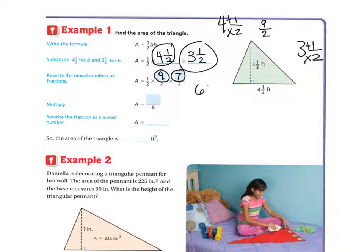So I get 63, and on the bottom I have 2 times 2 times 2. 2 times 2 is 4, times 2 is 8. So I'm going to get 63 over 8. And then I need to turn it back into a mixed number. And 8 goes into 63 7 times, with 7 left over. And I keep my 8 on the bottom. So the area of the triangle is 7 and 7 eighths feet squared.